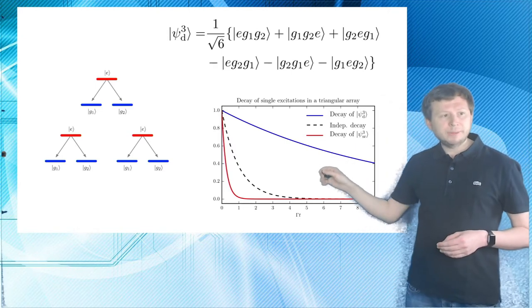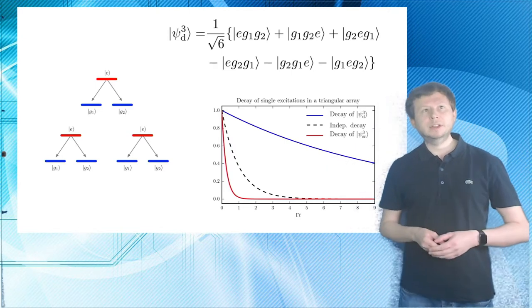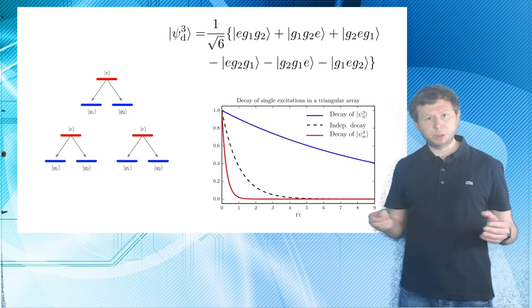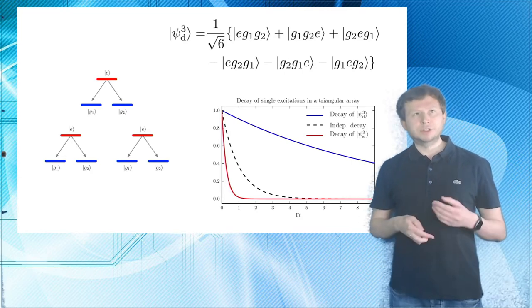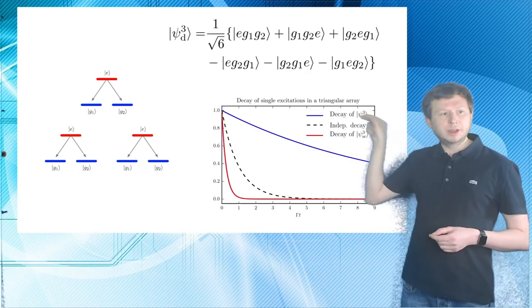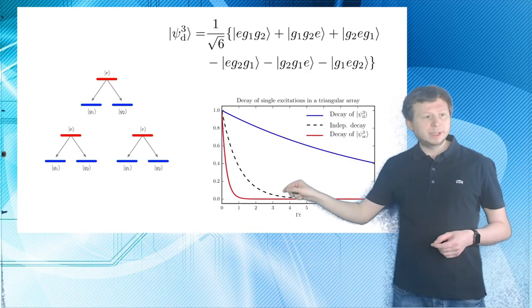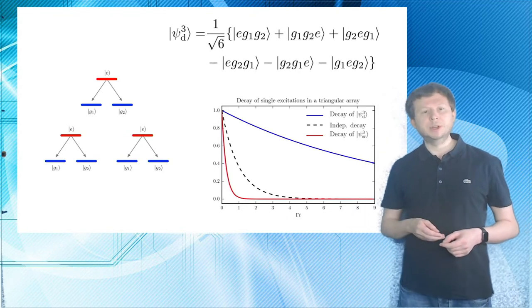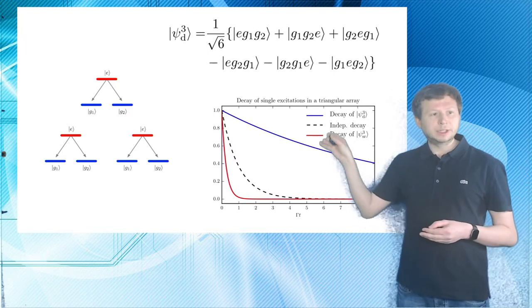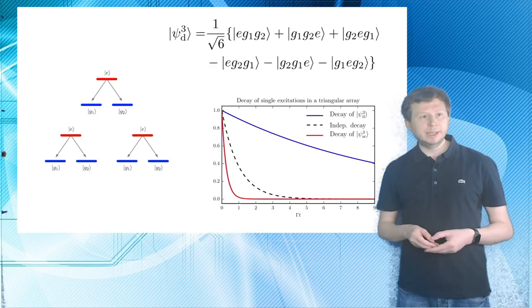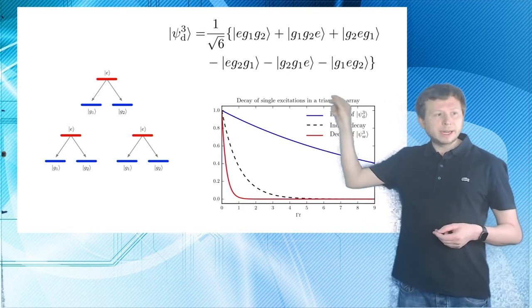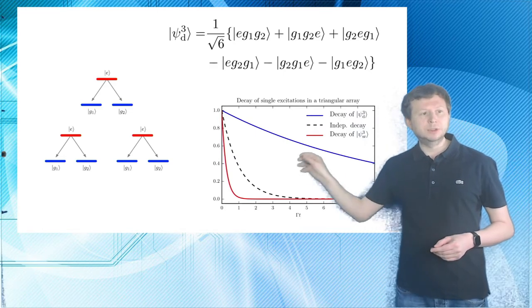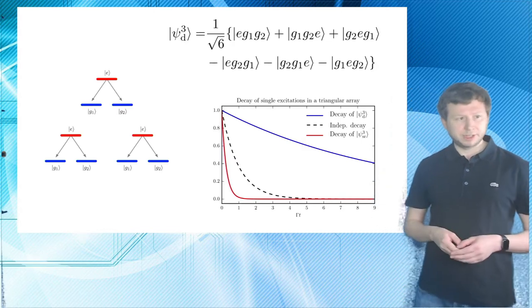And down here we've plotted the time evolution of such a state in a triangle with an interatomic distance of 0.3. So the state is not completely dark, but it's very subradiant. If we were to shrink down the triangle to sort of just one spot, this blue curve here would just be a horizontal line and the superradiant decay would go even further. So we can clearly see a distinction between this Psi3D, which we call the dark state and its subradiant behavior and its superradiant bigger brother, its analog, where all the signs up here would be positive. We have this very, very fast decay as compared to the individual non-collective atomic decay.